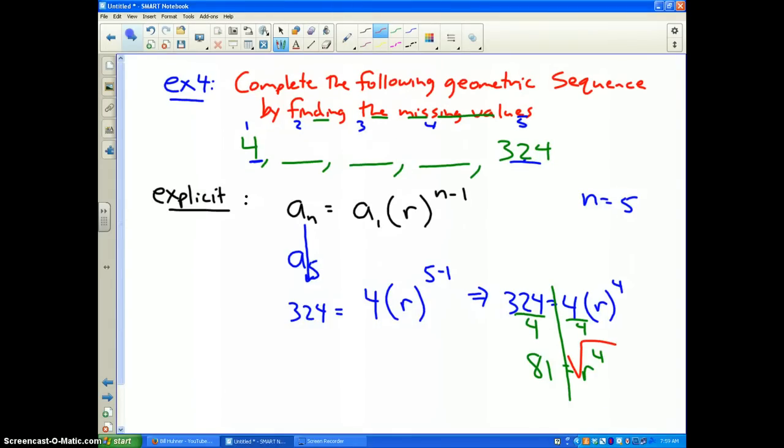So to get rid of the 4th power, what we need to do is find the 4th root of 81, because the power of 4 and the 4th root will cancel out. Well when you do that, you find out r is equal to 3. So r is 3 is my common ratio.